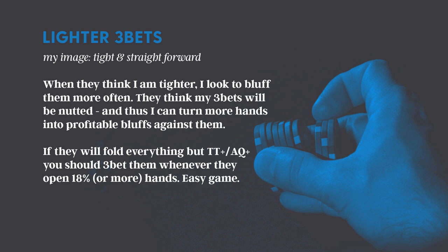I can turn more hands into profitable bluffs against them. Because if I'm three-betting them and they're thinking they don't want to give action with ace-jack or king-queen, they're probably going to fold those hands — which is fantastic. So if they're going to fold everything but tens-plus and ace-queen plus, then you should be three-betting them whenever they open with 18% or more hands. That's a very easy thing to do, and it's also easy to identify if someone's opening 20% or more hands if you're paying a little attention.